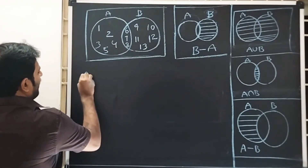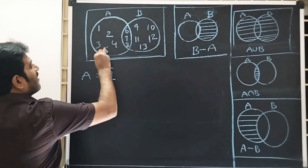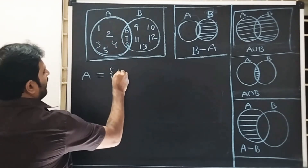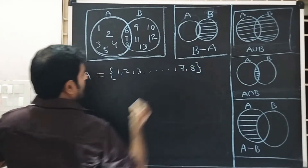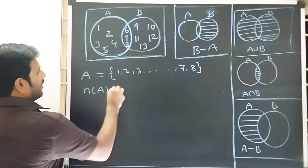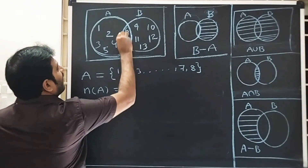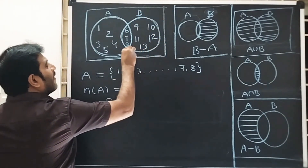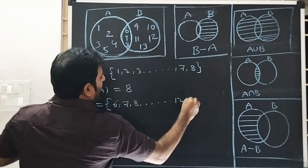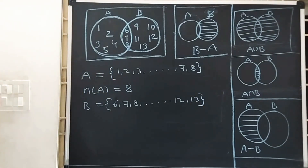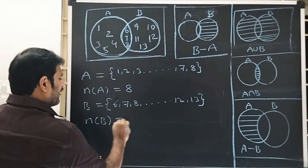Now set A — first circle elements: 1, 2, 3, 7, 8. N of A is equal to 8. Set B — second circle elements: 6, 7, 8, 12, 13 — 8 elements. N of B is equal to 8.